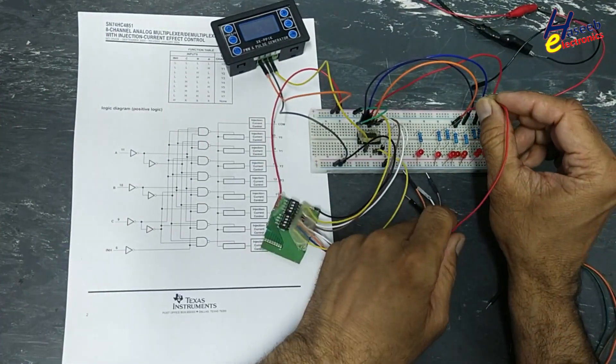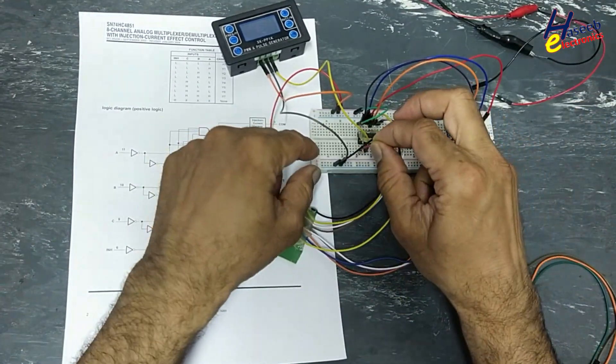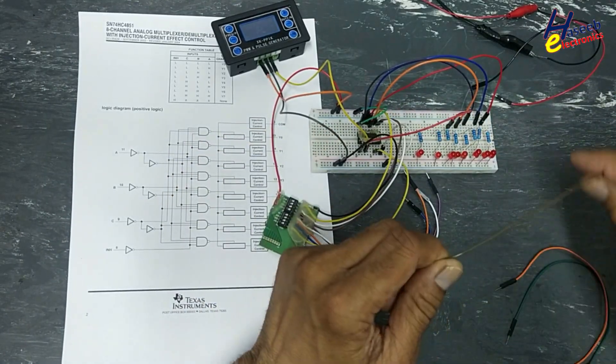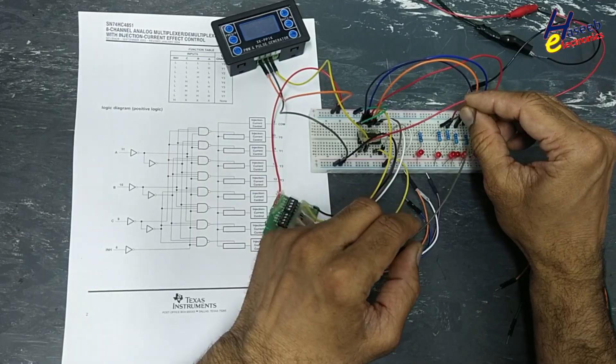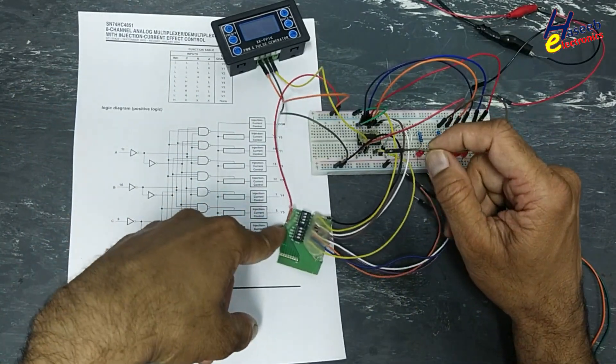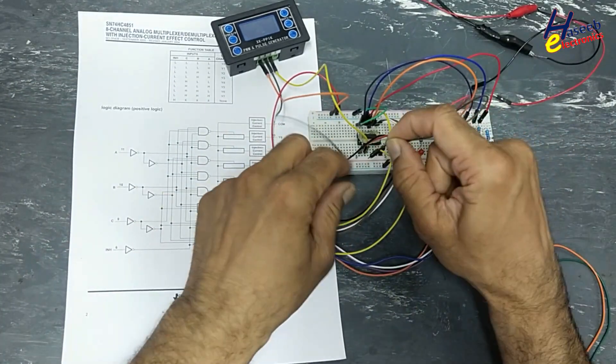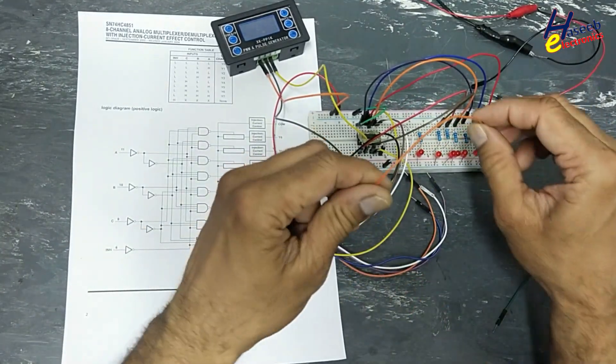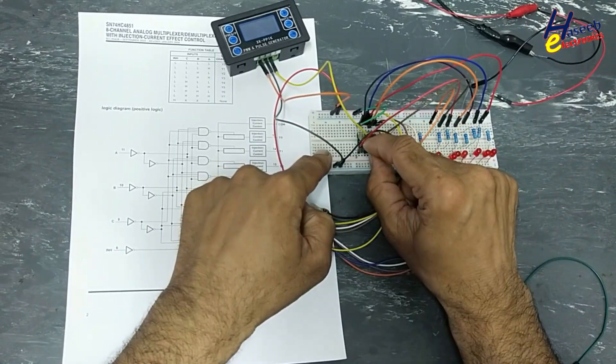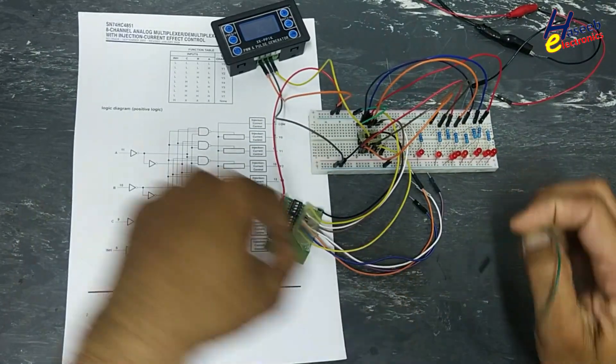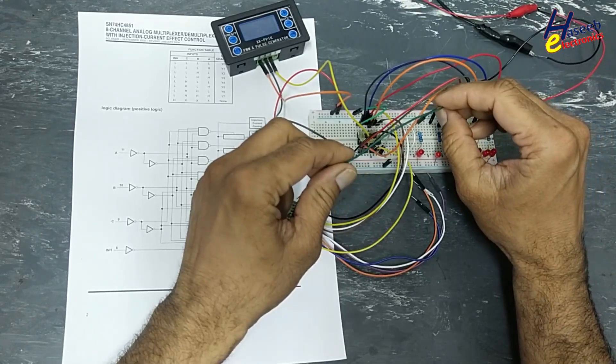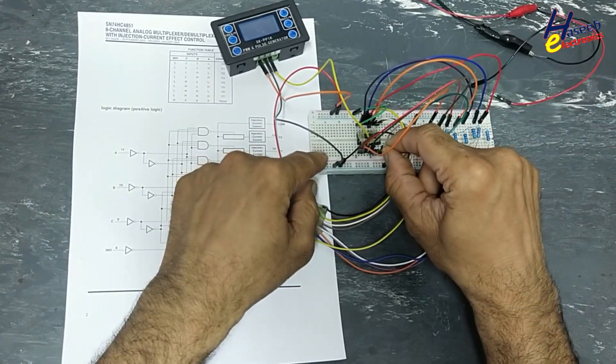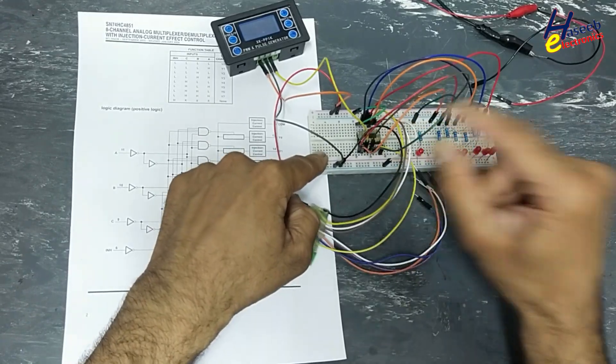Y three from pin number 12. Y four from pin number one. These are now outputs because we are testing it in demultiplexer mode, and then we will check multiplexer. Y five from pin number five. Y six from pin number two. Y seven from pin number four. Pin number seven not connected.